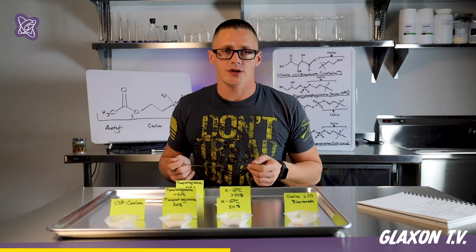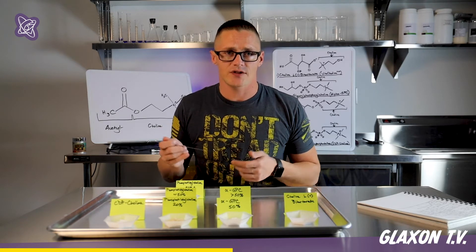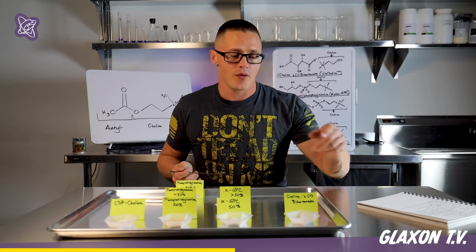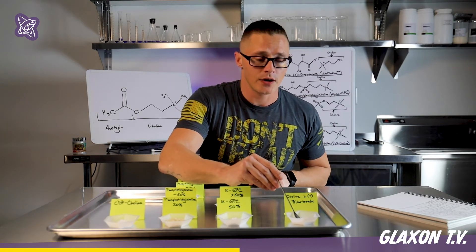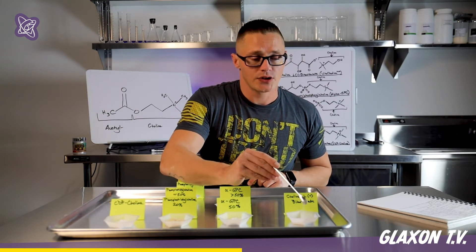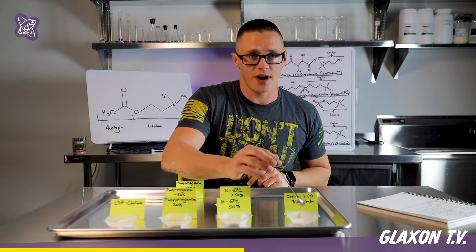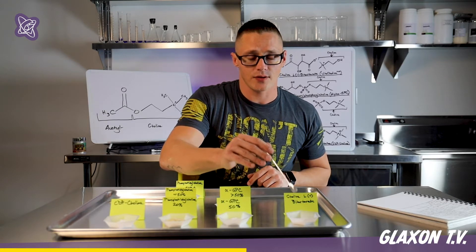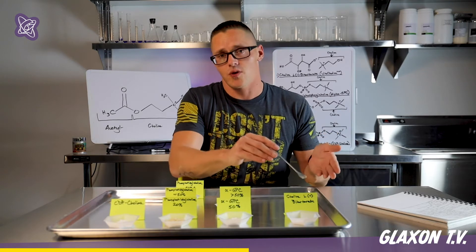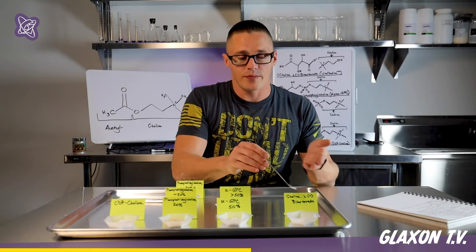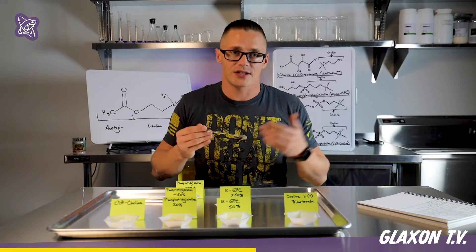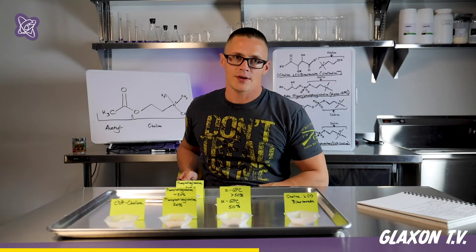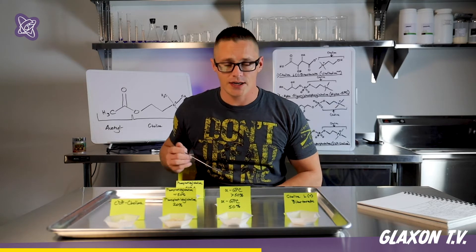Most of the time, choline bitartrate is a racemic mix of tartaric acid and choline, but what we have here is a completely levorotatory form of choline bitartrate, VitaCholine. This is a really good way to get the most bioavailable form of choline bitartrate on the market. Choline bitartrate will dissociate with tartaric acid and provide itself as an acetylcholine precursor, so it can become acetylcholine directly.